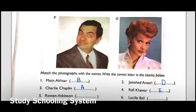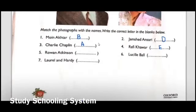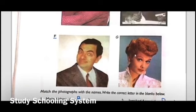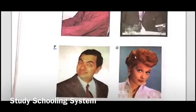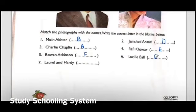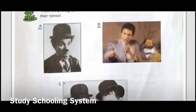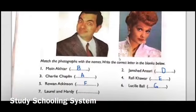Number 5: Rowan Atkinson. Yes, you're right — alphabet F. Let's fill that out. Number 6: Lucille Ball. Let's look at the options on our left — alphabet G and alphabet C. Yes, you're right, it's alphabet G. Now we have Laurel and Hardy left, and the only alphabet left is C. Let's fill C out.